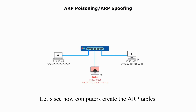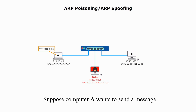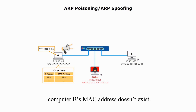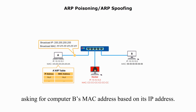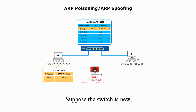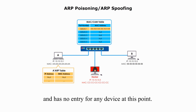Let's see how computers create ARP tables in a normal situation. Suppose computer A wants to send a message to computer B, but in computer A's ARP table, computer B's MAC address doesn't exist. Therefore, it will broadcast to the network asking for computer B's MAC address based on its IP address. Suppose the switch is new and has no entry for any device at this point.